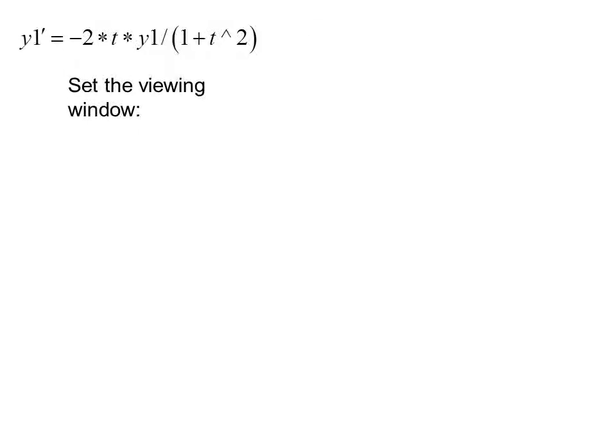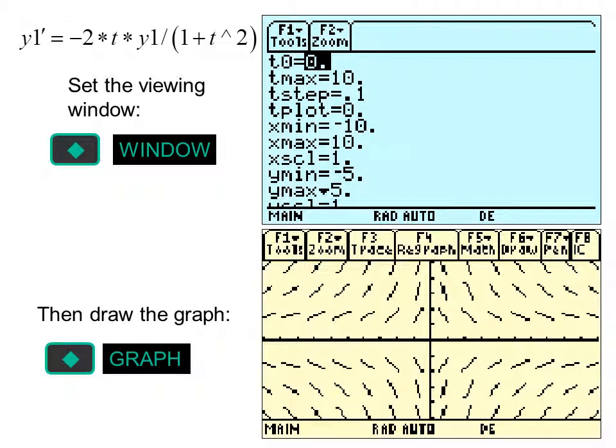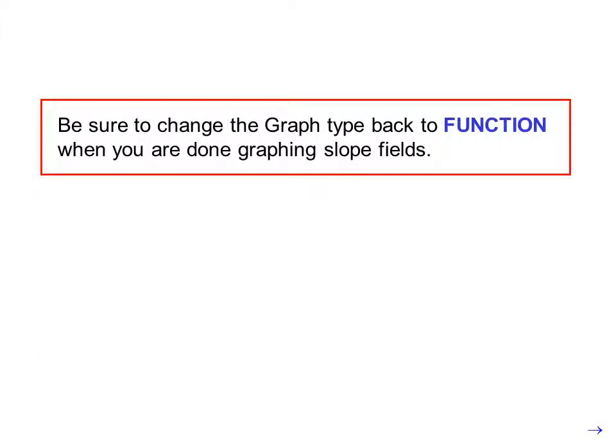Leave yi1 blank. Set the viewing window. Press diamond window and enter the following values. t0 equals 0, tmax equals 10, tstep equals 0.1, tplot equals 0, xmin is negative 10, xmax is 10, xscale is 1, ymin is negative 5, ymax is 5, yscale is 1. Then draw the graph, diamond graph. Be sure to change the graph type back to function when you are done graphing slope fields.